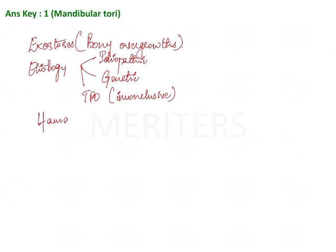They are hamartomas — this is something important you need to remember. Hamartomas means they are normal tissue that is growing at a different rate compared to normal. For example, the tissue present there is not malignant per se, but its growth is rapid compared to the surrounding tissues. Mandibular tori are commonly seen in Mongoloids — this is an important MCQ point.